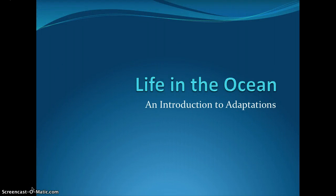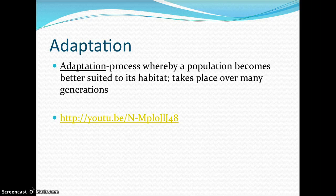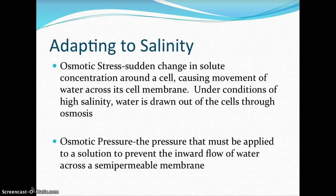Life in the ocean: introduction to adaptations. An adaptation is a process whereby a population becomes better suited to its habitat. It takes place over many generations, and you increase genetic variability through sexual reproduction over asexual reproduction, because you pass on genes from both the sperm and the egg when they meet, helping organisms and populations become better suited for their environment as they evolve over time.